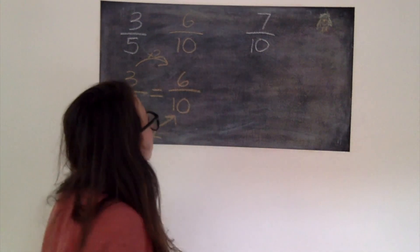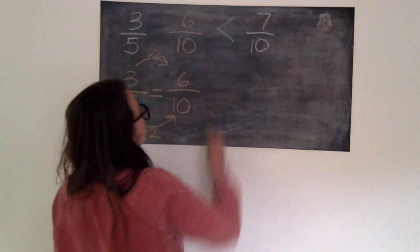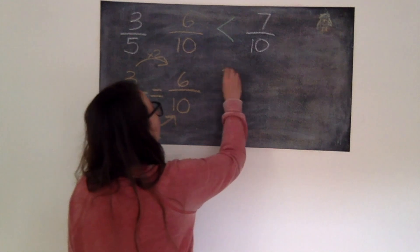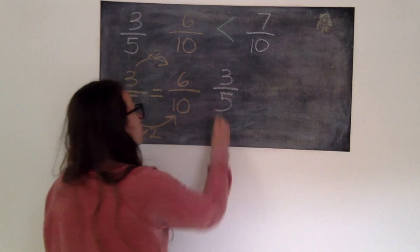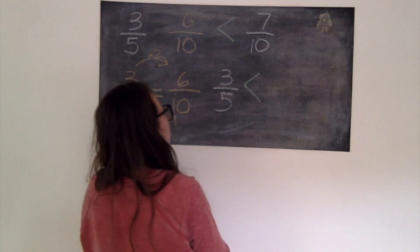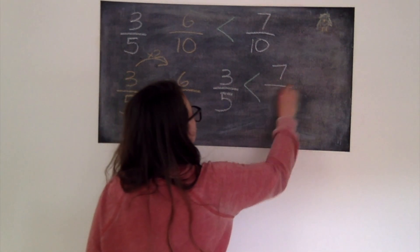Well I'd rather have 7 pieces of the cake rather than the 6 pieces. So we can say that 7/10ths is greater than 6/10ths, or we can say our original fraction was 3/5ths. So 3/5ths is less than 7/10ths.